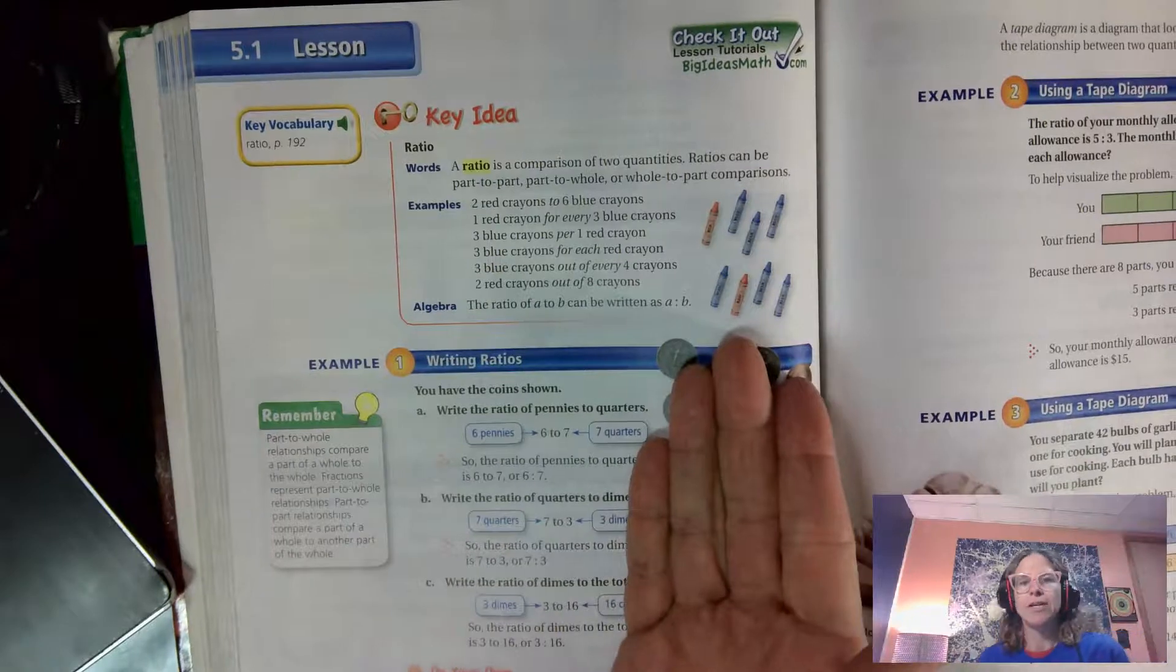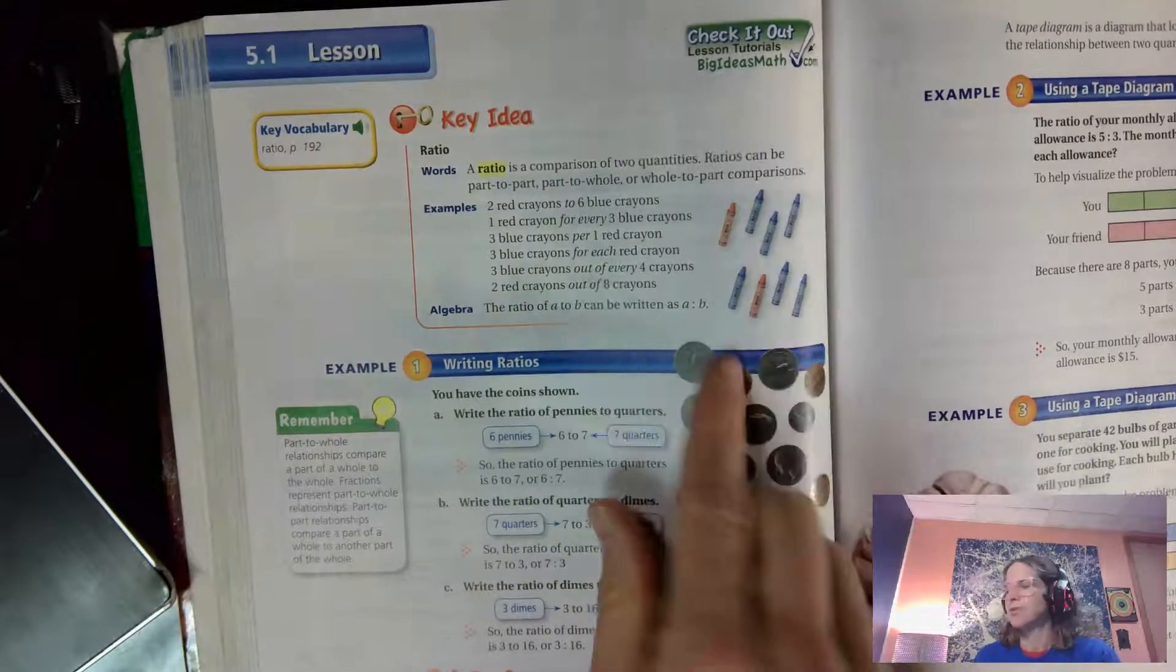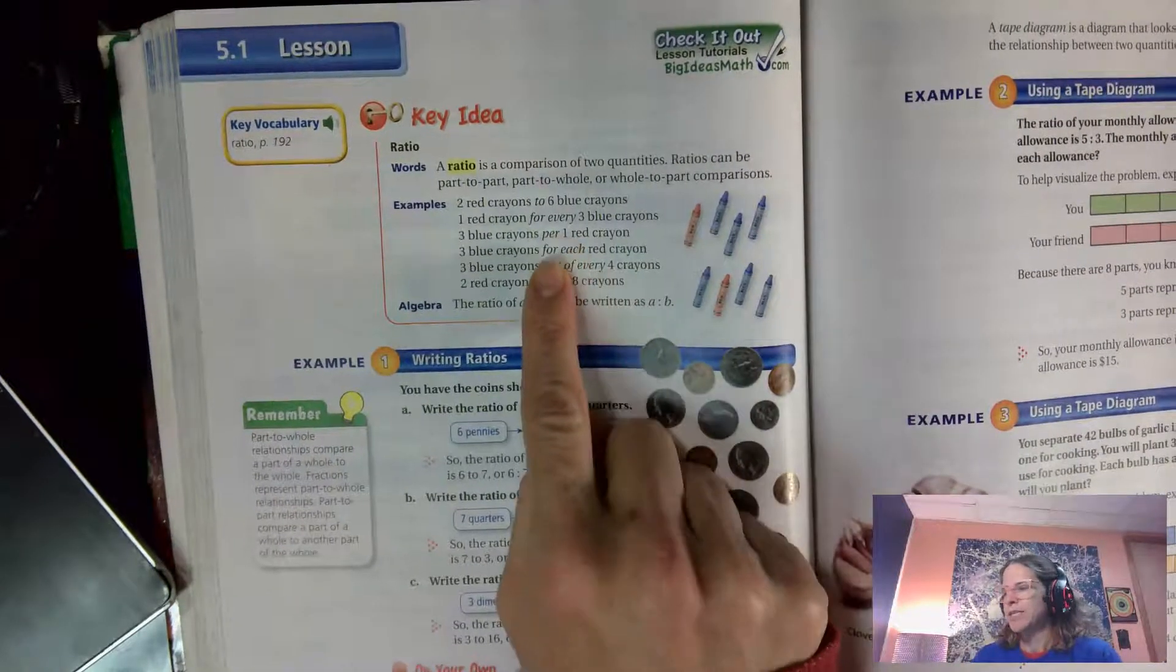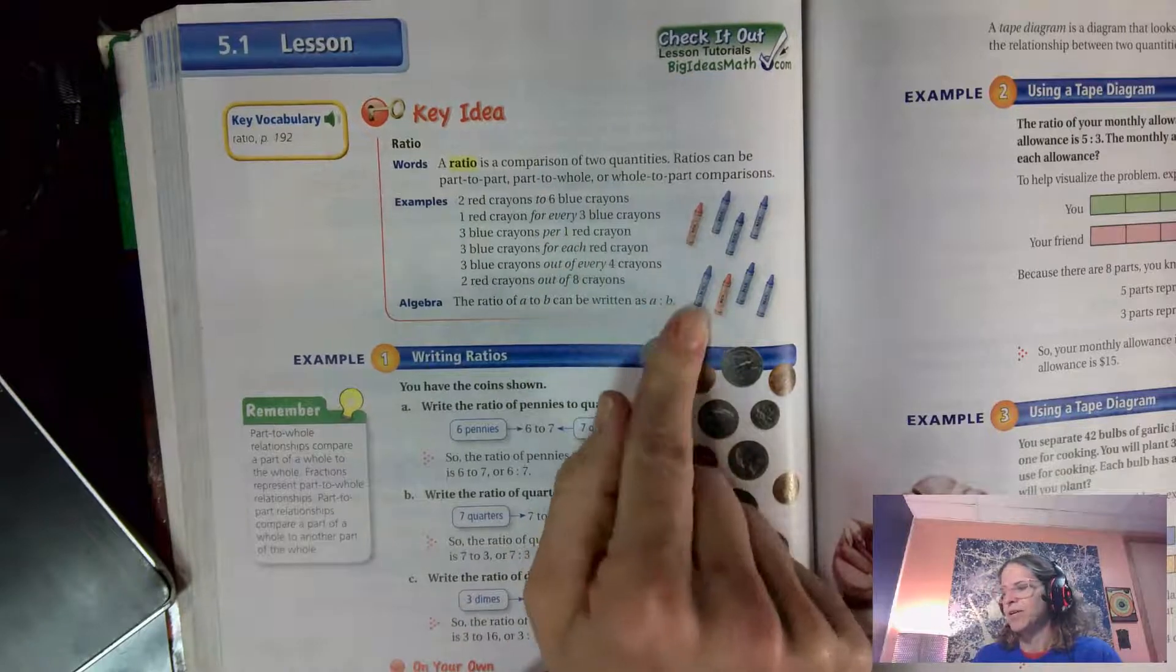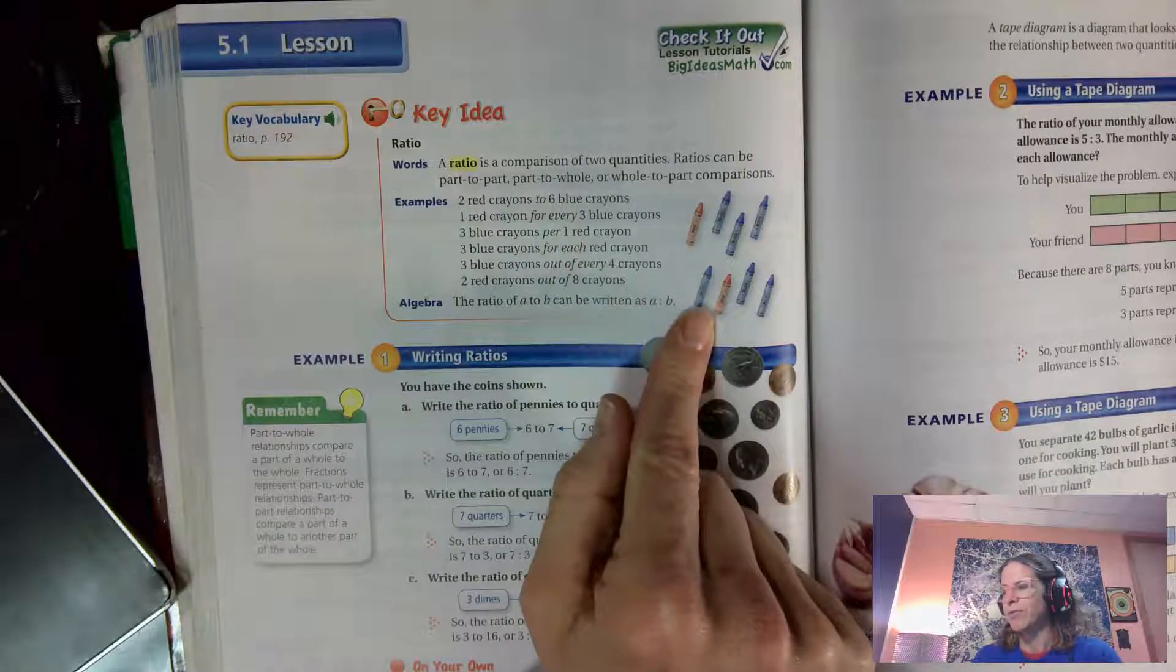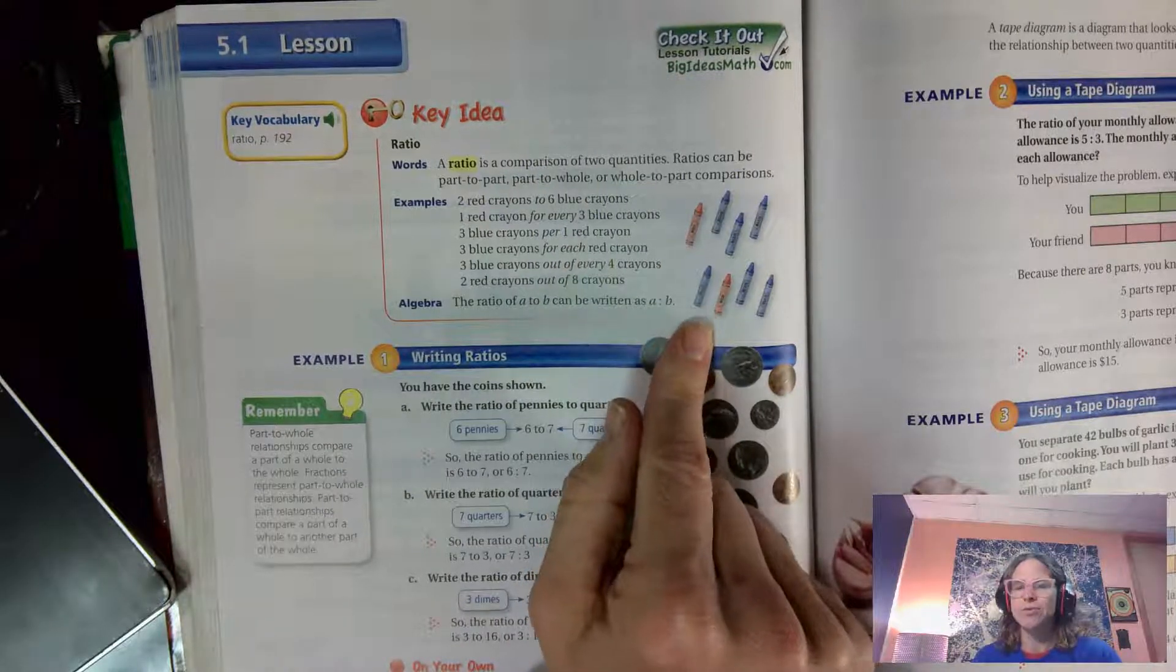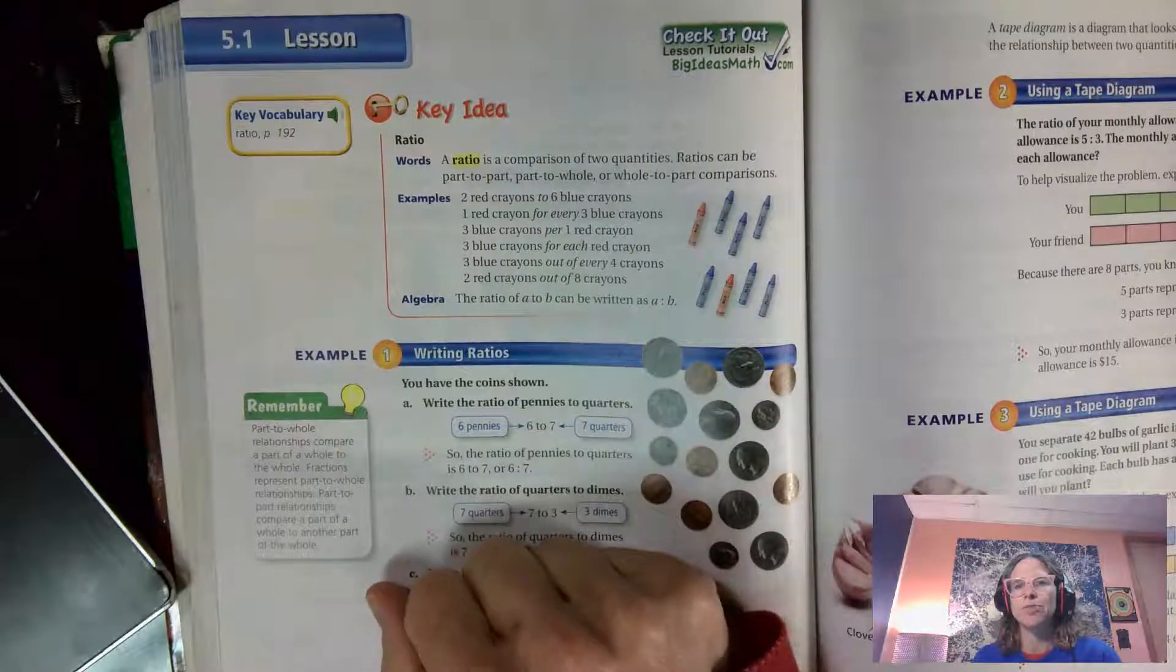For each time that you're doing a comparison, you have to make sure that you know if you're doing it for each, like in this example it'd be for each red crayon to blue crayon or red crayon to total crayon. So those are some things that you're going to want to make sure that you watch out for.